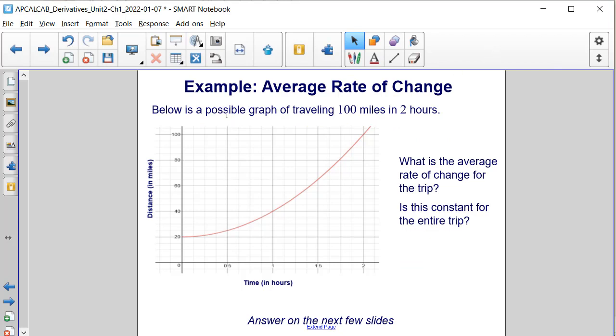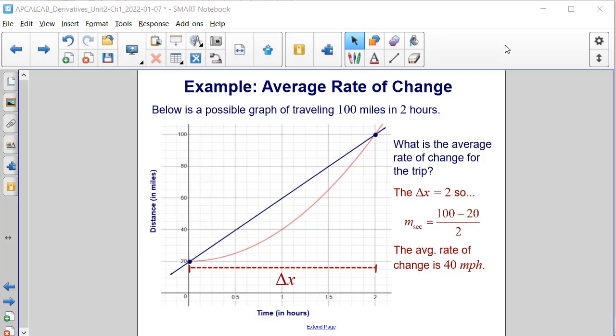Let's try an example. Below is a possible graph of traveling 100 miles in two hours. What is the average rate of change for the trip? And is this constant for the entire trip? Let's find out. Let's start with that first question. What is the average rate of change for this trip?